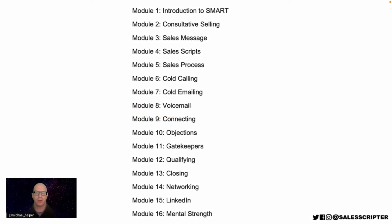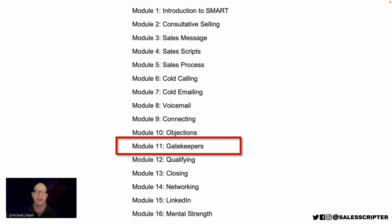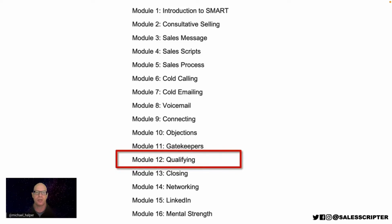This is module 12 in the Smart Sales System. In the previous module, we talked about how to deal with and get around gatekeepers. In this module, we're going to talk about qualifying, which is basically a process of asking questions in order to determine how good or bad the prospect is in terms of quality and how likely they are to purchase from you.